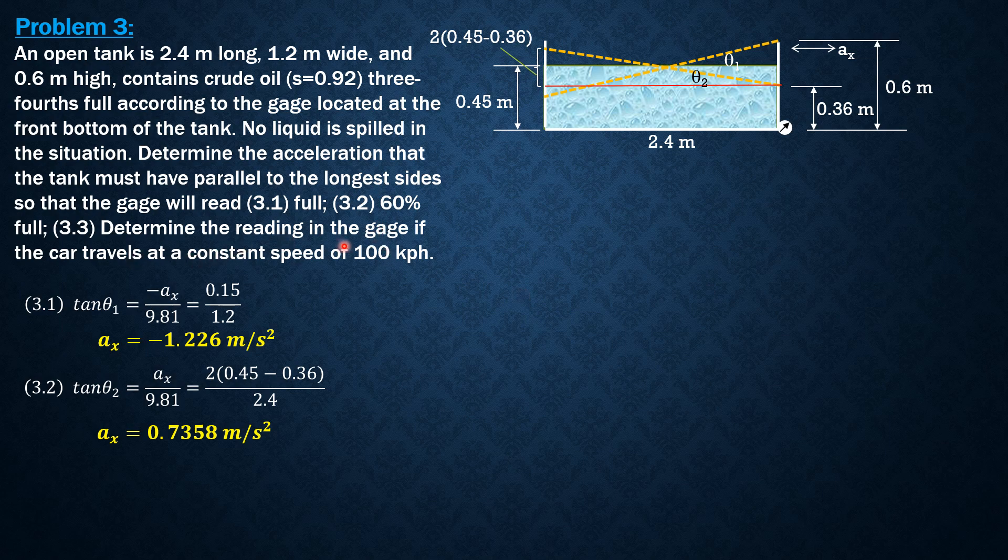Determine the reading in the gauge if the car travels at a constant speed of 100 kph. Constant speed means zero acceleration, so the depth anywhere is uniform at 0.45. Since gauge pressure is specific weight of liquid times depth, so it is specific weight of crude oil—specific gravity 0.92 times specific weight of water—times 0.45.